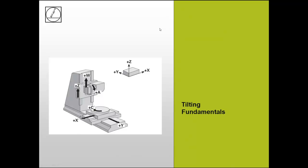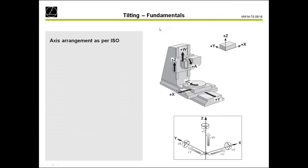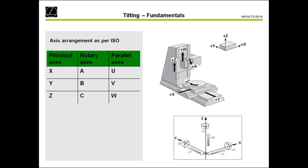First, we start with the fundamentals for tilting. Everybody knows from the basic training we have our three linear axes: the X-axis, the Y-axis and the Z-axis. For tilting, we need three more axes — our rotary axes. These rotary axes are A, B and C. A is the rotary axis around the X-axis, B is the rotary axis around the Y-axis, and C is the rotary axis around the Z-axis.